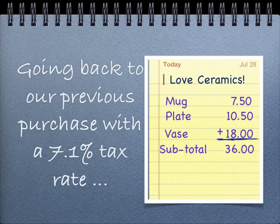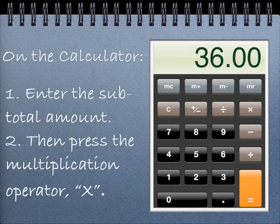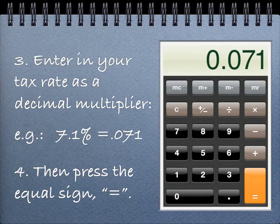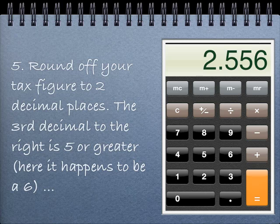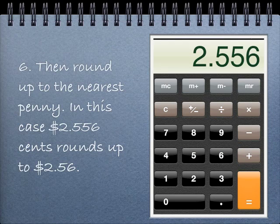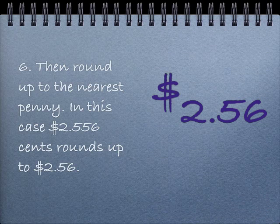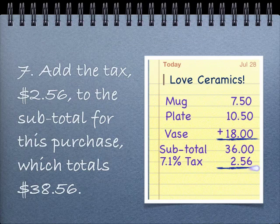Going back to our previous purchase with the 7.1% tax rate: on the calculator, enter the subtotal amount, then press the multiplication operator, x. Enter your tax rate as a decimal multiplier — in this case .071 — then press the equal sign. Round off the tax figure to two decimal places. The third decimal to the right is 5 or greater; here it happens to be a 6, so you'll round up to the next penny. In this case, $2.556 rounds up to $2.56. Add the tax, $2.56, to the subtotal for this purchase, which gives you a total of $38.56.